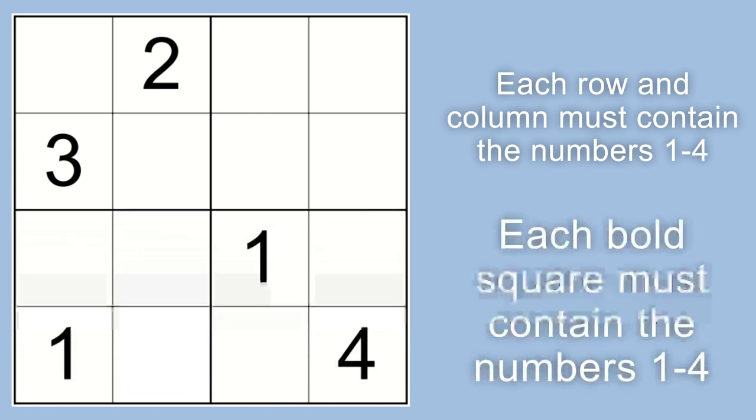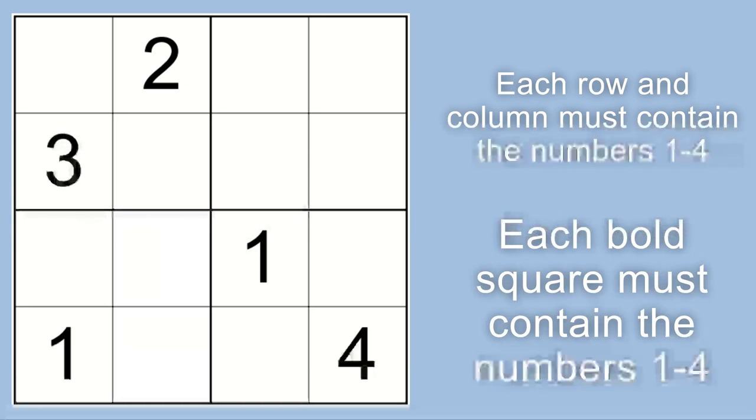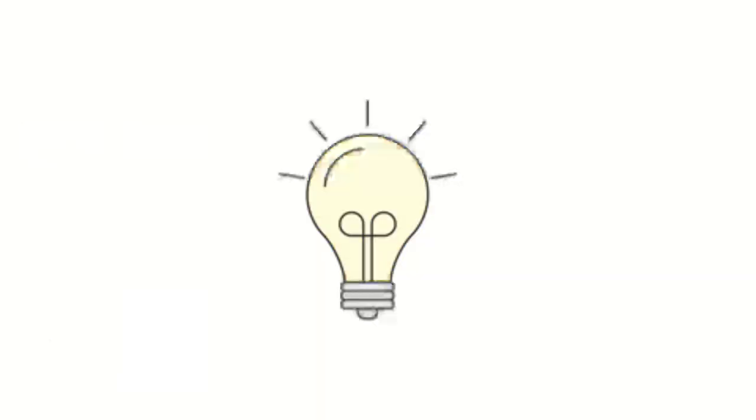Here we have a mini Sudoku grid where each row and column must contain the numbers 1 to 4, and at the same time each bold square must contain the numbers 1 to 4. So each of the little squares will need to contain the numbers 1 to 4 as well.